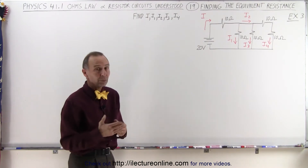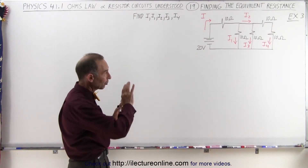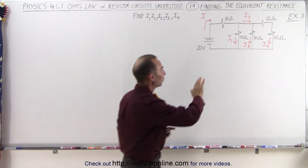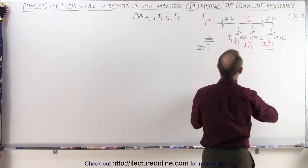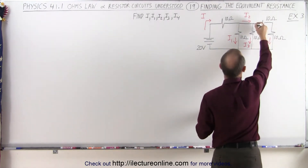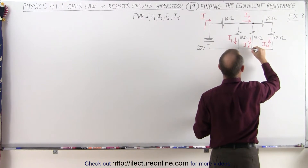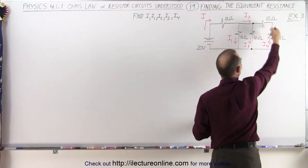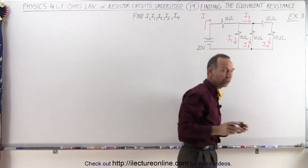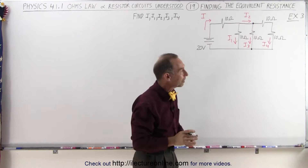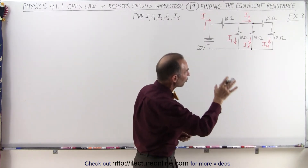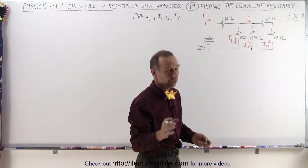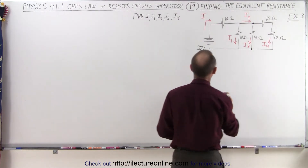We start with the part of the circuit farthest away from the battery, which means all the way to the right. We find a couple of branch points — there's one here, there's one there. Notice we have two paths from one branch point to the other, so there's a parallel circuit in between, but on the right side there are two resistors, which means we should reduce those first to a single resistor.